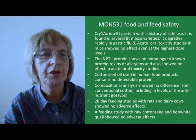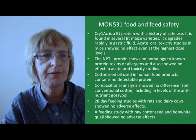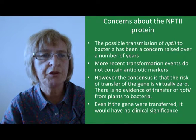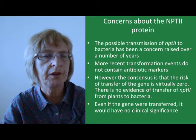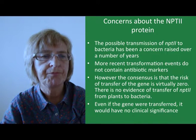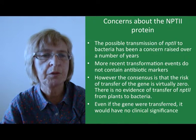Compositional analysis of MON531 showed no difference from conventional cotton, including in levels of the antinutrient gossypol. 28-day feeding studies with rats and dairy cows showed no adverse effects, and a feeding study using raw cottonseed fed to bobwhite quail also showed no adverse effects. Over the years, concerns have been expressed about the use of antibiotic resistance markers in GM crops, and more recent events no longer use such markers. The main concern has been possible transfer to bacteria in the gut or in the soil. However, there is no evidence of such transfer and the consensus is that the risk is virtually zero. Even if transfer did occur, there would be no clinical significance, as there are already low levels of naturally occurring resistance to neomycin in soil bacteria.